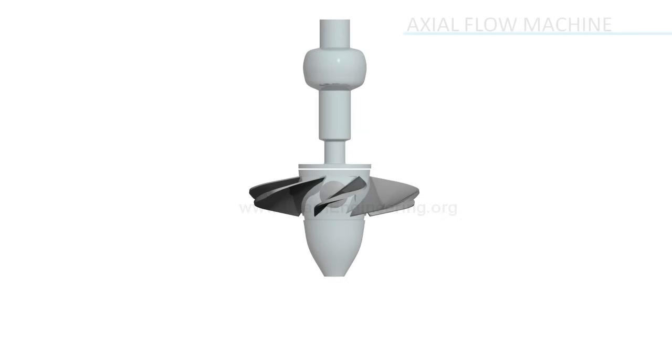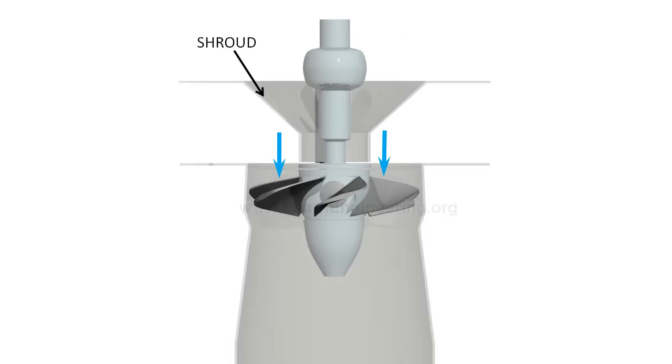Kaplan turbines are axial flow machines, where absolute velocity of flow is parallel to axis of turbine. Water is precisely made to pass through runner blades with help of a shroud.